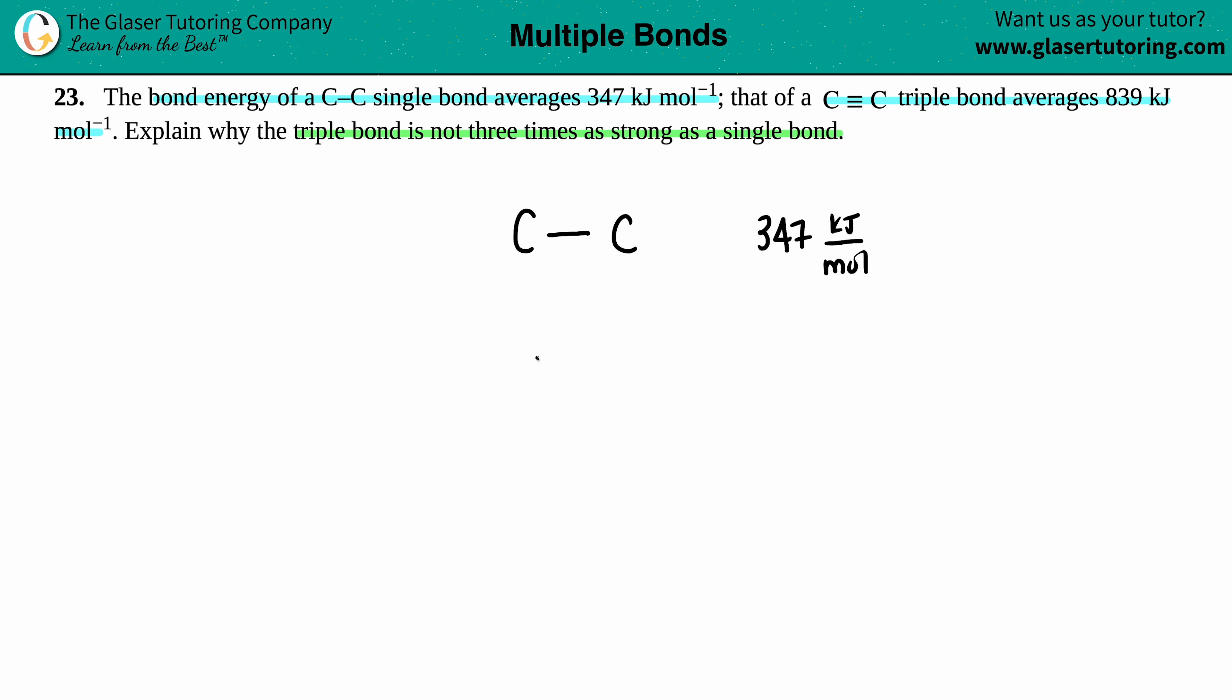And then they're telling us that a triple bond with three lines, C≡C, is roughly 839 kilojoules per mole. So the question is, why isn't this three times more than the first one when this is literally three lines and this is only one line?